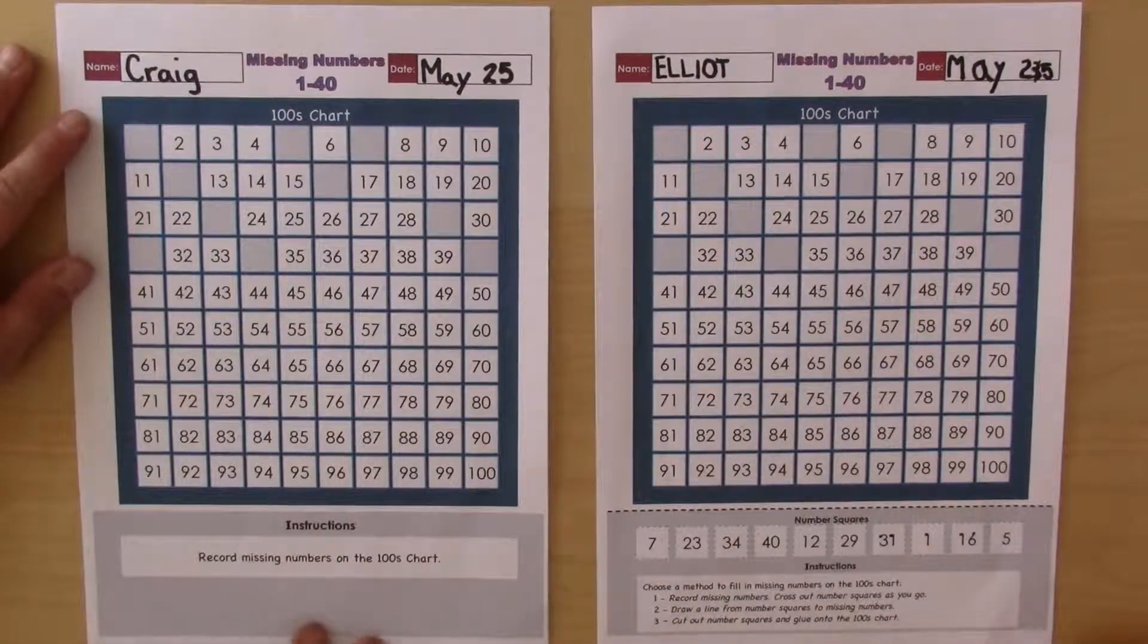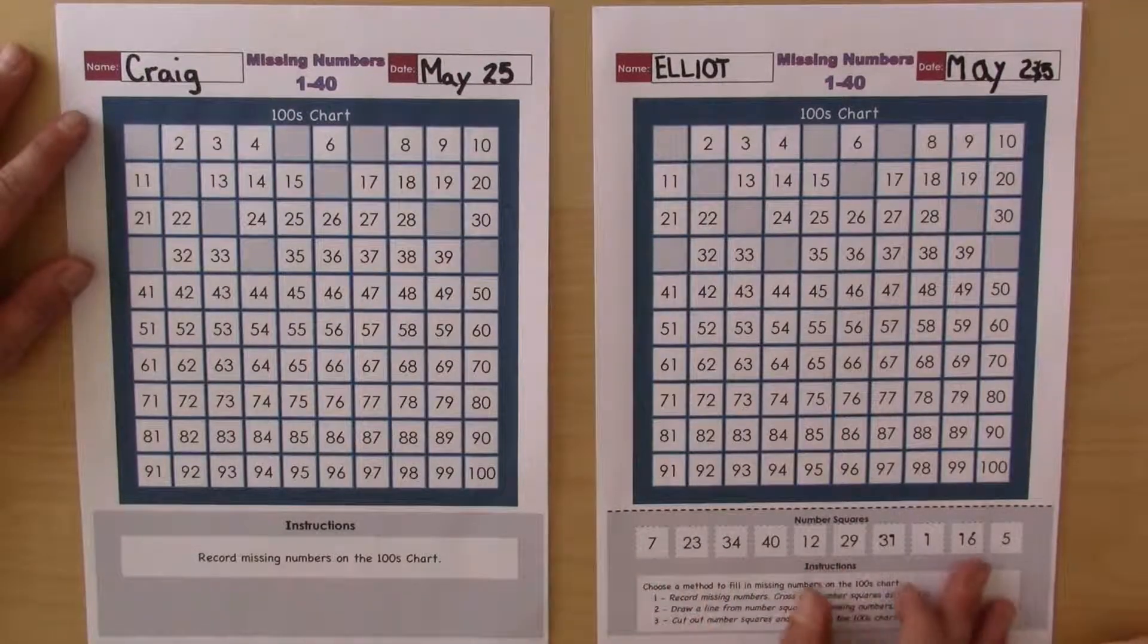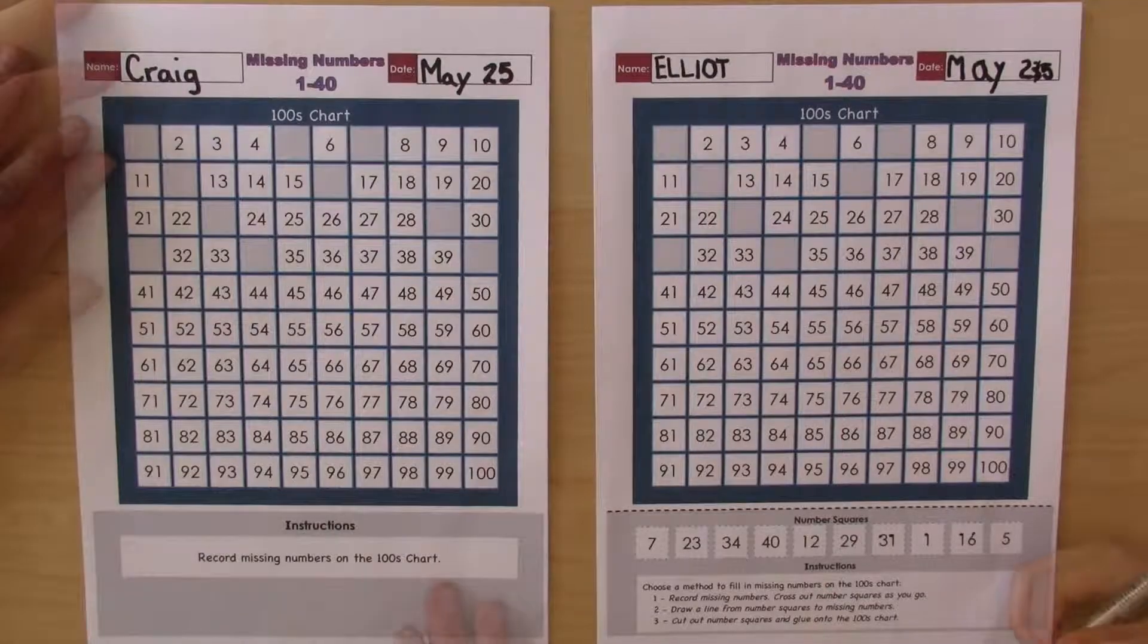So this download has two versions. One that provides the numbers that are missing at the bottom here and then one that does not.